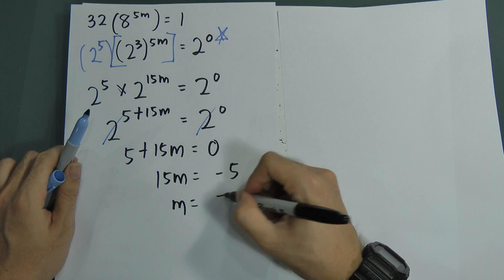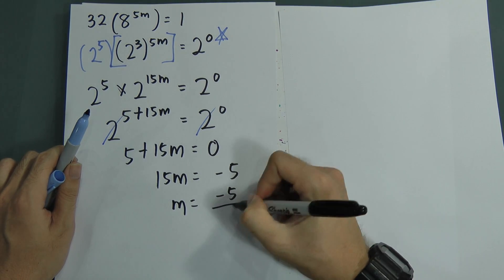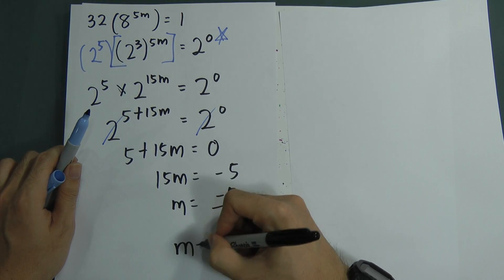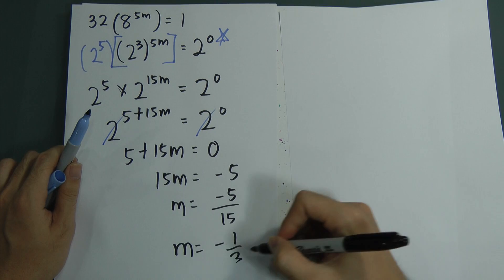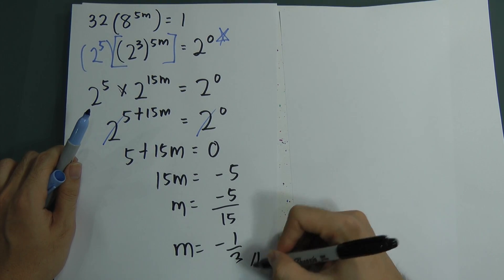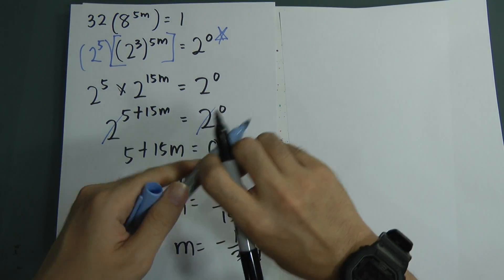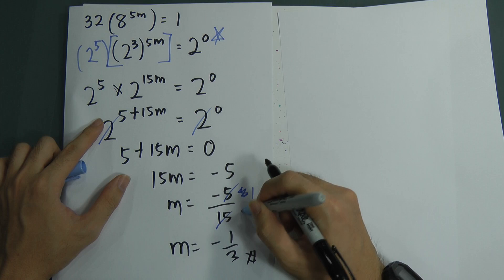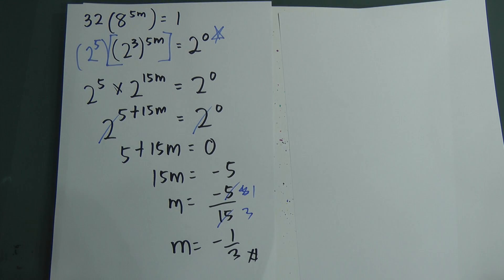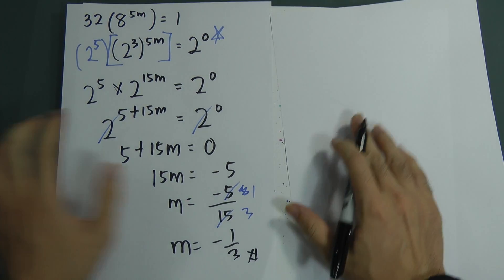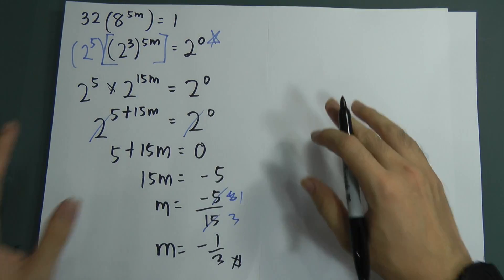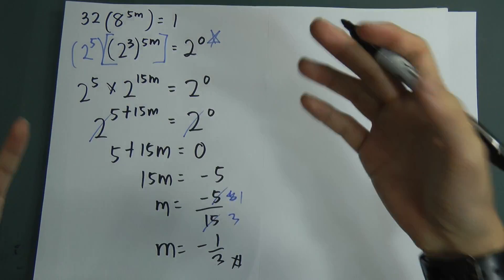M equals to negative 5 over 15. Therefore, m equals to negative 1 over 3. I just simplified: divide by 5, divide by 5. I said I'm going to teach you another method — not a different method, just a different way to solve it.